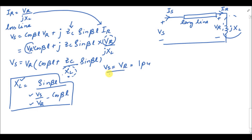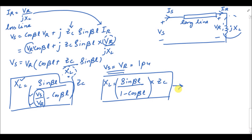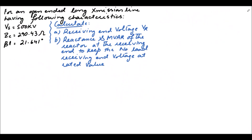If you want to maintain a constant voltage profile throughout the transmission line, you set Vs = Vr, which is commonly 1 per unit. When Vs = Vr, the fraction Vs/Vr becomes equal to 1, so the XL formula simplifies to: XL = Zc·sin(βl) / (1 − cos(βl)). This is the formula to use for a constant voltage profile throughout the line. Now we have an example in which we will calculate the receiving-end voltage, the reactance value, and the MVAR rating of the reactor.